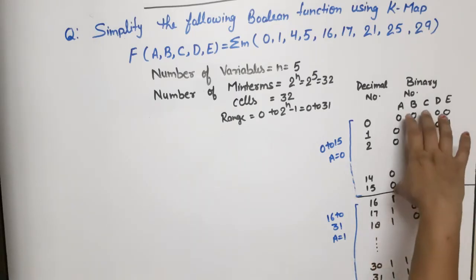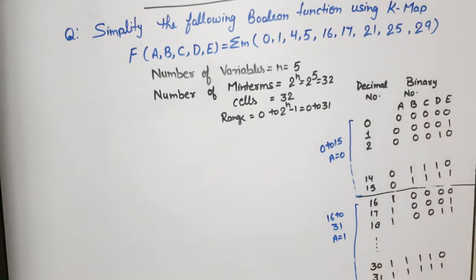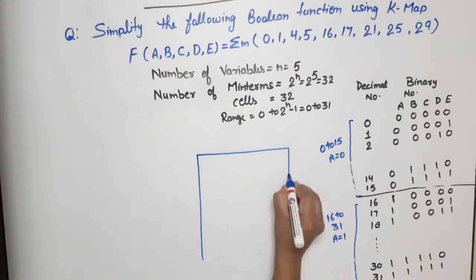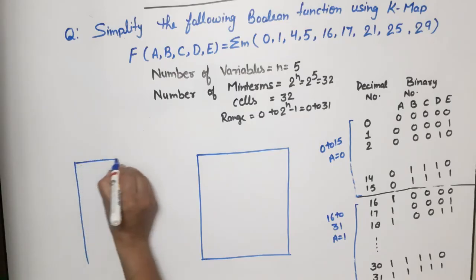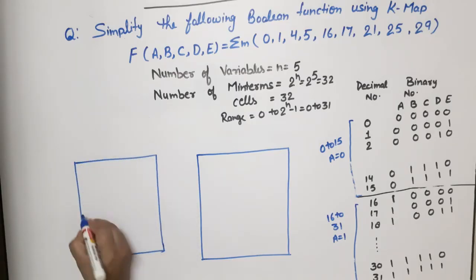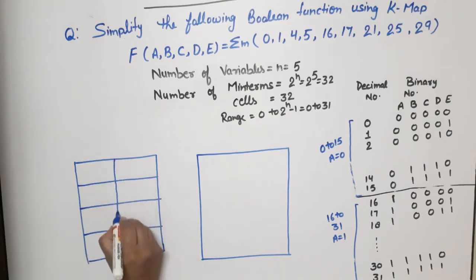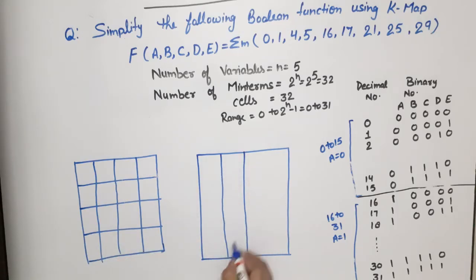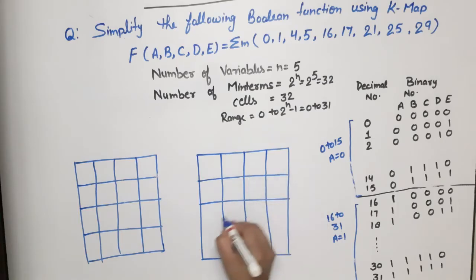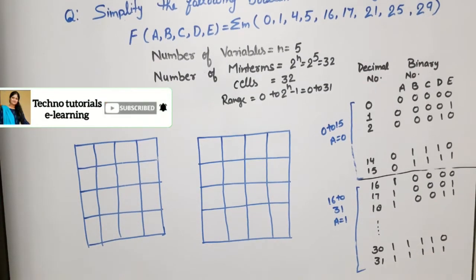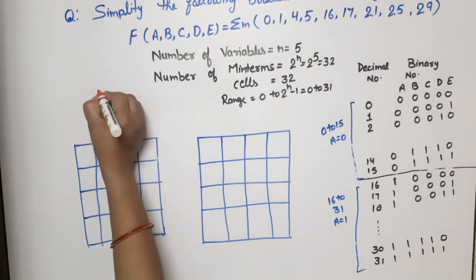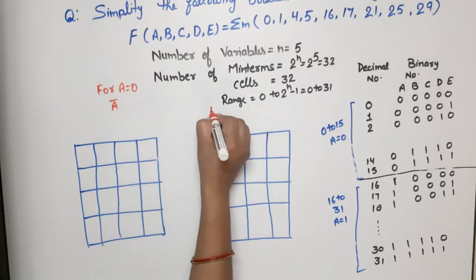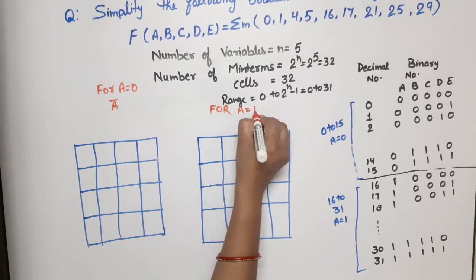So what we will do is draw 2 K-maps for this. The first K-map will be for A is equal to 0, meaning for A-bar. The second K-map will be for A is equal to 1, meaning for A. We will draw both K-maps and then simplify them.